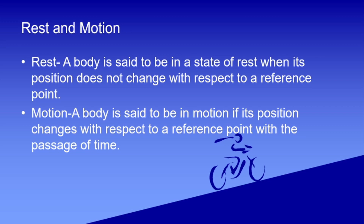So now the definitions: A body is said to be in a state of rest when its position does not change with respect to the reference point. And the body is said to be in motion if its position changes with respect to the reference point. For example, if we take a reference point at the base of an inclined plane and our cycle is moving away from it, the cycle is in motion because its position is changing with reference to that point.